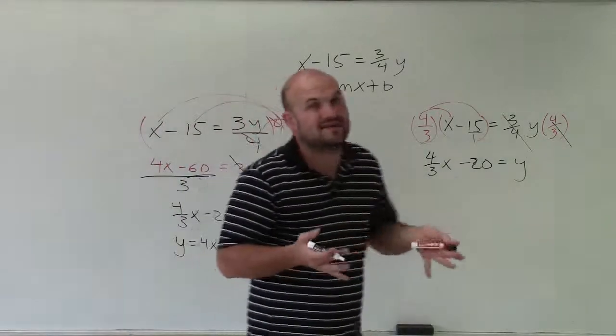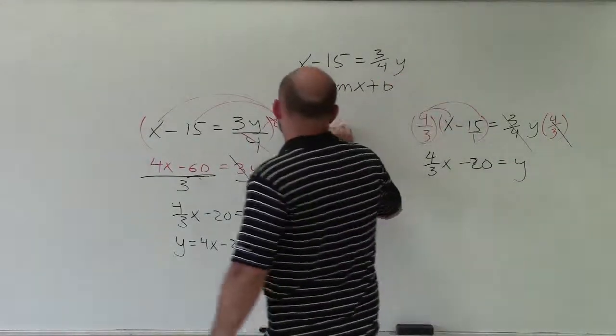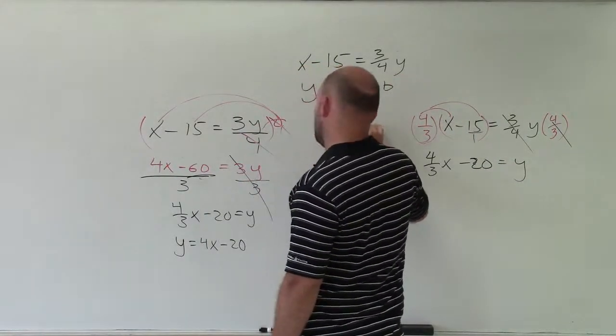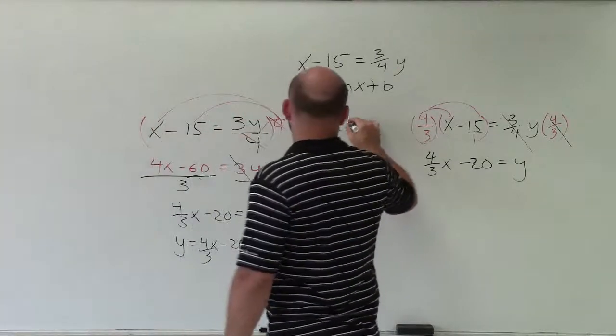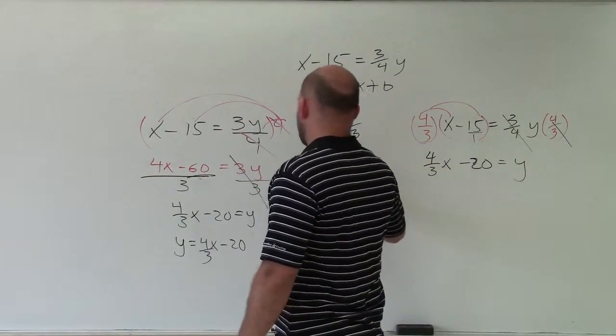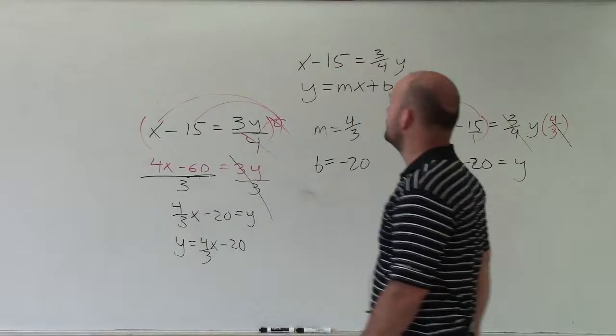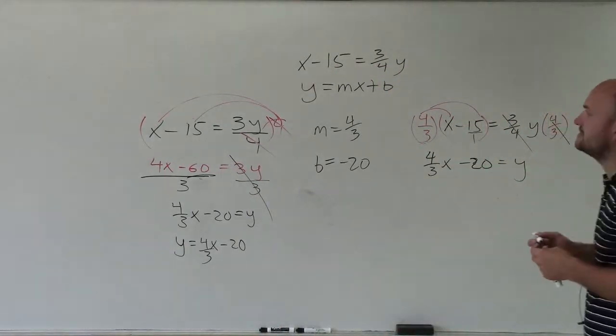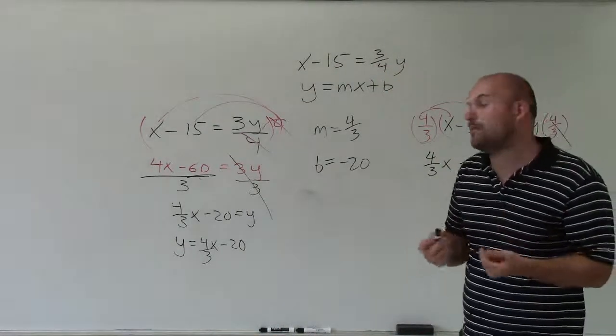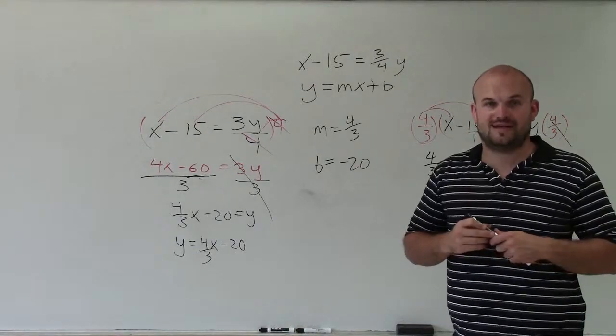Now I can identify what m and b are. So m equals, ah, I didn't write that there. m equals four-thirds and b equals negative 20. So therefore, in this equation, I can say that the slope is four-thirds and my y-intercept is going to be negative 20.